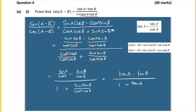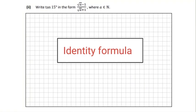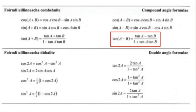A lot of work for part a! Now part b — we need to find tan(15°) in the form (√a - 1) / (√a + 1). We need two standard angles whose difference is 15 degrees. We'll use 60 and 45, since 60 - 45 = 15.